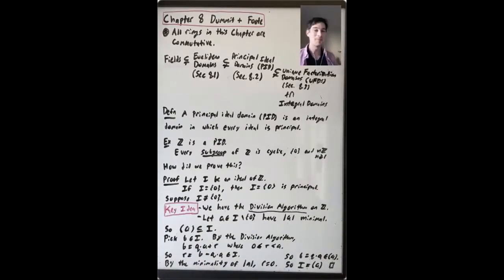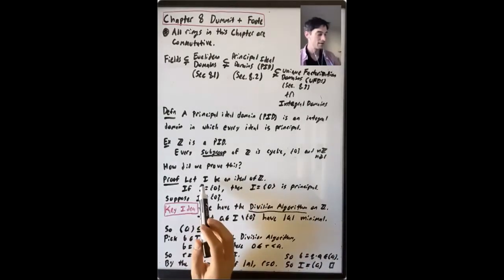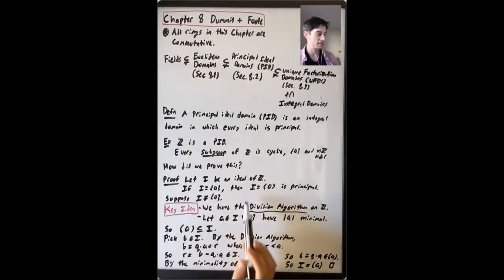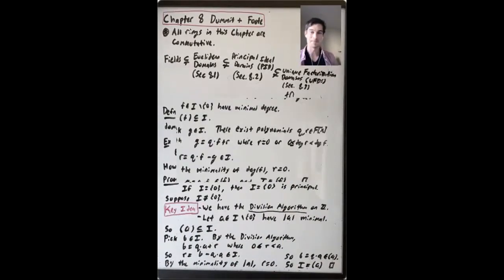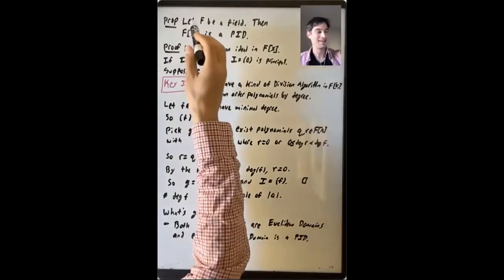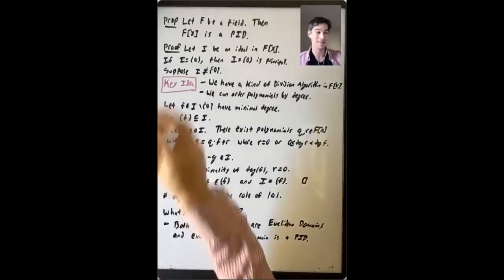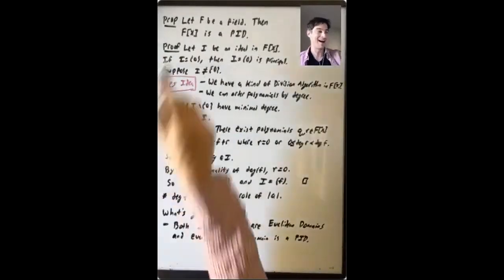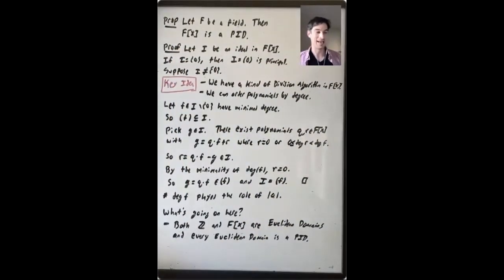Now let's give a very similar argument to prove that another ring is a PID. Let F be a field; then F[X], the polynomial ring with coefficients in F, is a PID. The proof will be very, very similar to the one that showed that Z is a PID.